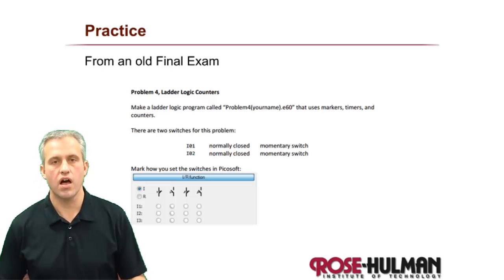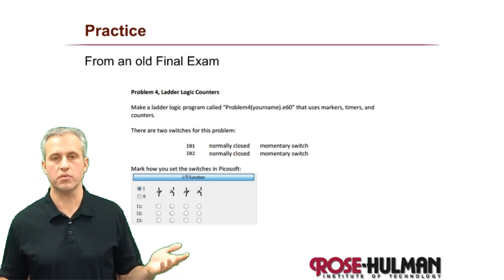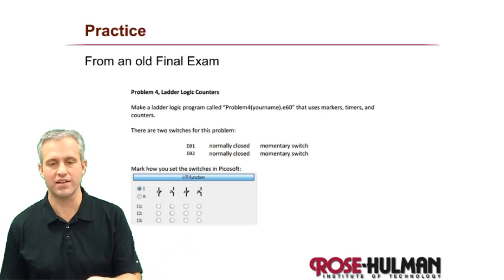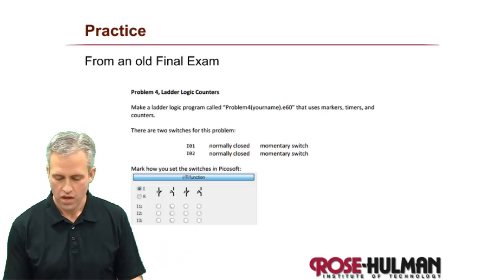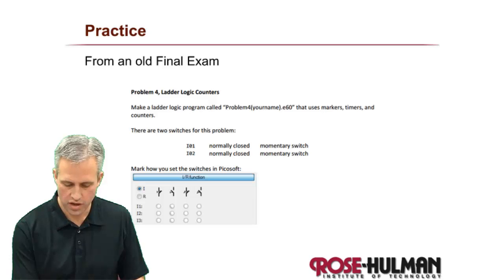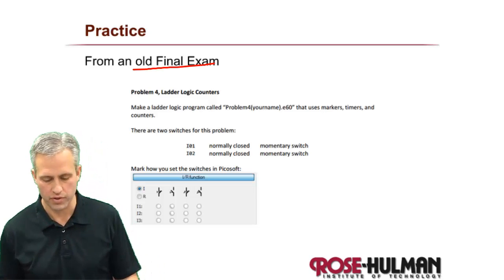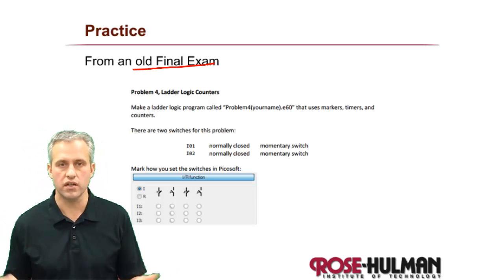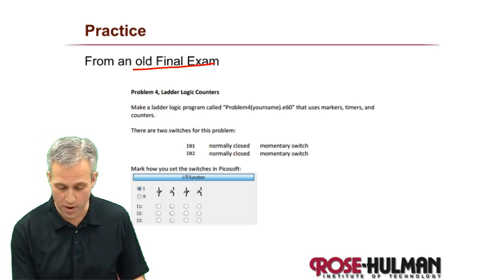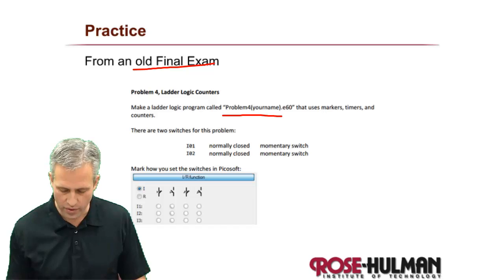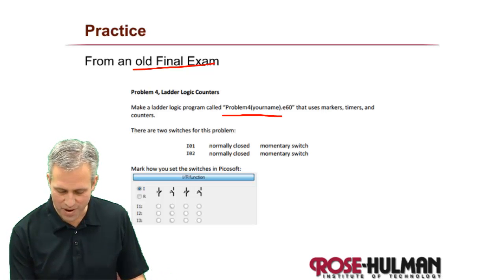Welcome back to the last chunk. We want to get some practice, so I found an old exam question from a final exam a couple years ago. We'll read it and solve it together. This was problem four. The problem statement says there are two switches — normally closed momentary — for the first switch, and the second one is also normally closed momentary.